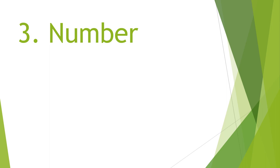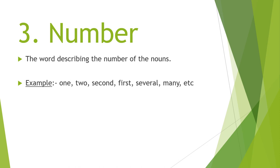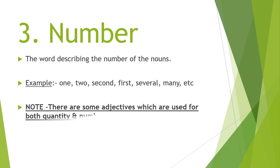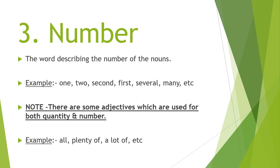The third kind is Number. The word describing the number of nouns — how many there are. One, two; your ranking words like second, first — that is the cardinal and ordinal numbers — several, many. These come under the category of number adjectives. Please make a note: some adjectives are used for both quantity and number, which can be a bit confusing and overlapping. Examples like all, plenty of, a lot of are used in both quantity as well as number.